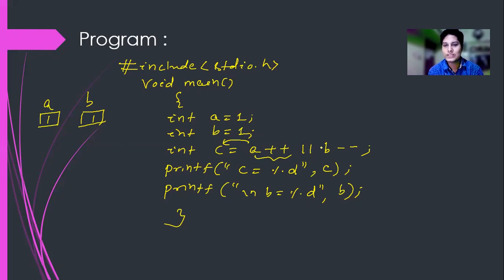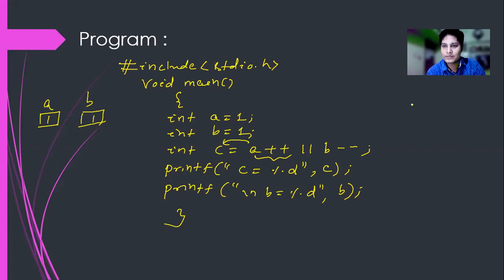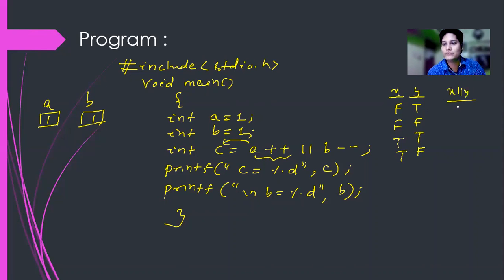Here we are using the OR operation. We know that if one value is 1 — that means true — the total result will be true. In the OR operator: false||false = false, true||false = true, false||true = true, true||true = true. So if the first value is true, there is no need to calculate the second one. Here a++ — the value of a is true — so no need to calculate the second operand.